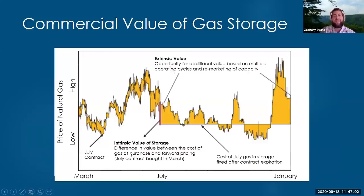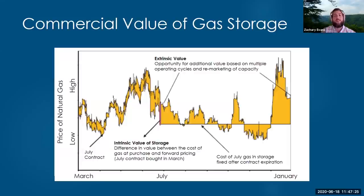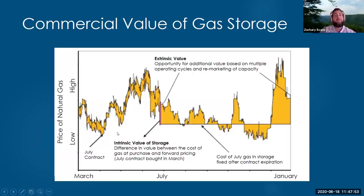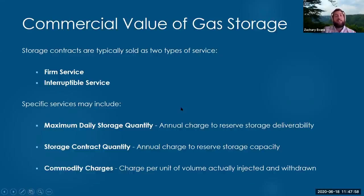Commercial value of storage is both intrinsic and extrinsic. Intrinsic value is the price difference: if you buy a contract for gas in spring for July delivery and can buy it for $1.00/MCF and sell at $1.25/MCF, you have 25 cents of intrinsic value. The extrinsic value is that after that contract expires, you can absorb additional price fluctuations and take advantage of further price increases. Salt caverns especially — because of the tremendous rates at which gas can be cycled — can be used multiple times per year, each time capturing extrinsic value. Storage service is typically sold as either firm service or interruptible service.